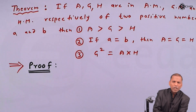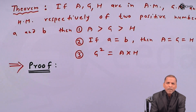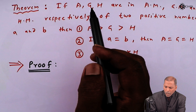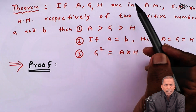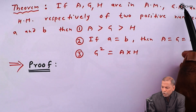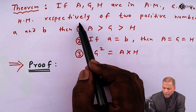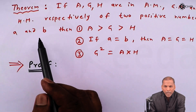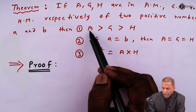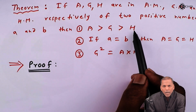Hello friends. Now we see the theorem which is based on arithmetic mean, geometric mean, and harmonic mean of the chapter sequence and series. The theorem is: if capital A, capital G, capital H are the arithmetic mean, geometric mean, and harmonic mean respectively of two positive numbers a and b, then we have to prove that arithmetic mean is greater than geometric mean, which is further greater than harmonic mean.